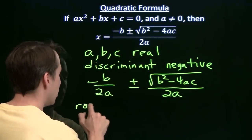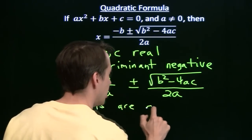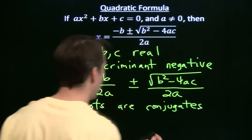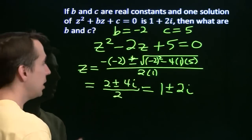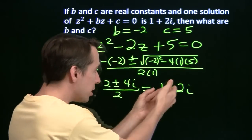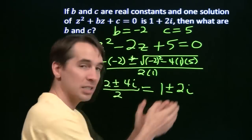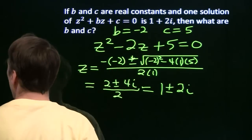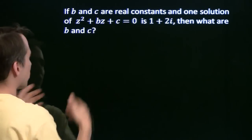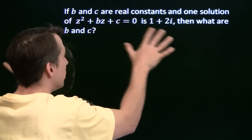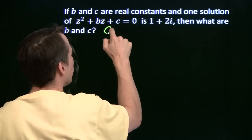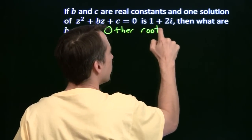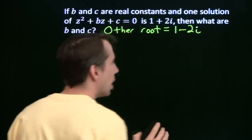That tells us the roots are conjugates — and that's what we saw right back here. Real thing plus imaginary thing, same real thing minus same imaginary thing. The roots are conjugates — we could have seen that right away. And that gives us a much faster way to solve this problem. We can see right away that the other root is 1 minus 2i because the roots are conjugates.